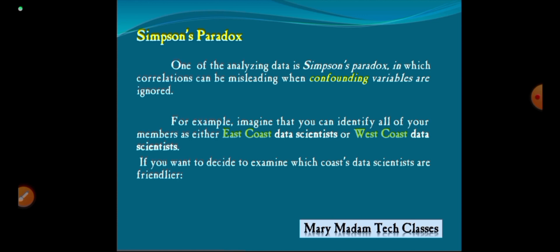In Simpson's Paradox, correlations can be misleading when confounding variables are ignored. A confounding variable is a third variable that influences both the dependent and independent variables.